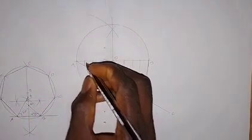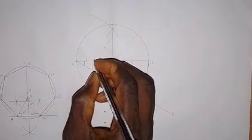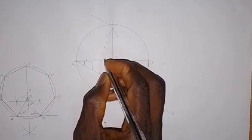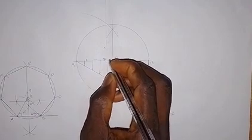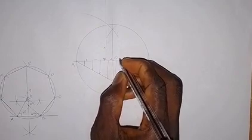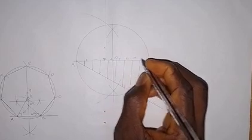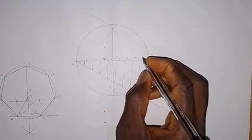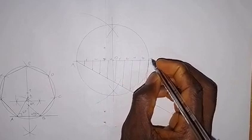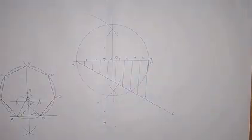Now we number these points on line AB. Here is point 1, this is point 2, this is point 3, here is point 4, this is point 5, here is point 6, this is 7, this is point 8, and this is point 9 — which is B.